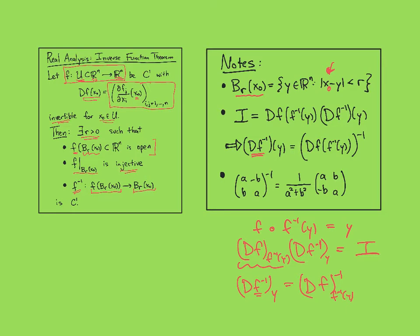And so this is a lot to digest because you're taking the derivative matrix of f evaluated at f inverse of y and then taking the inverse matrix. So there's two different kinds of inversion here: this is the inverse function and this is the inverse matrix.